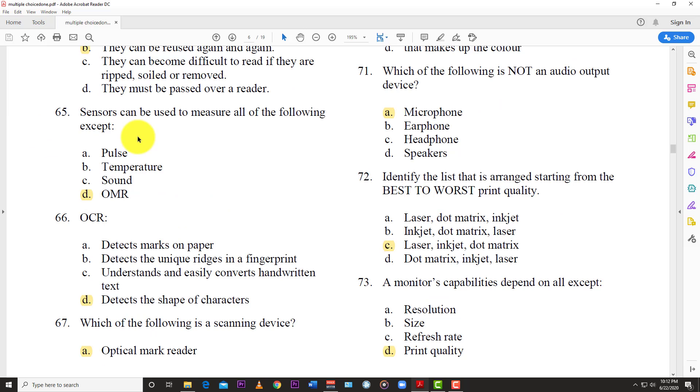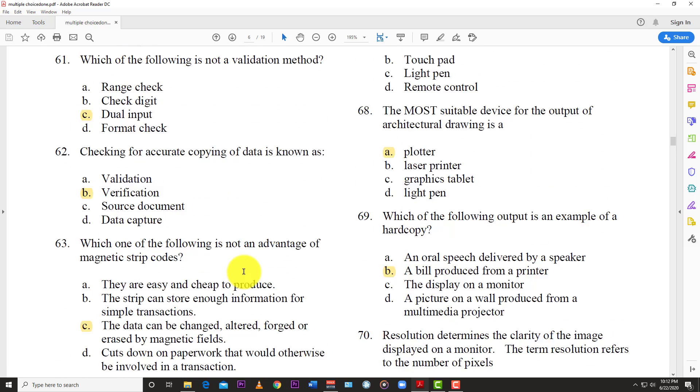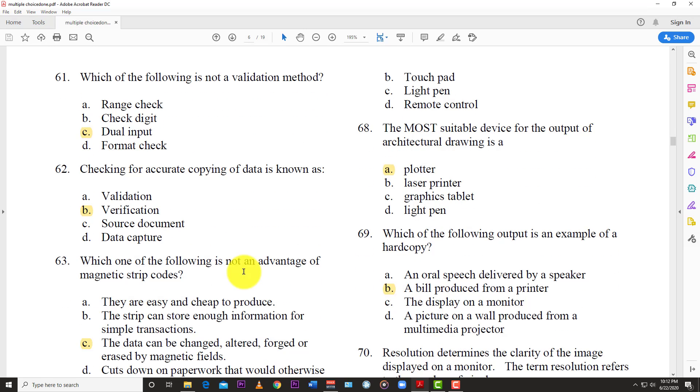Question 65: Sensors can be used to measure all the following except, and the answer is D, OMR or optical mark recognition. Question 66: OCR means what? What is OCR? D, detects the shape of characters. It means optical character recognition. So that's D. Number 67: Which of the following is a scanning device? And the answer is A, optical mark reader, OMR. So you see the rephrasing the same questions in different ways. Same concepts, but in different ways rephrasing these things over the years.